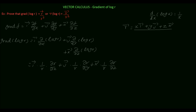Now we need to find the values of ∂r/∂x, ∂r/∂y, and ∂r/∂z. Since r vector equals xi plus yj plus zk, the modulus r equals the square root of x² + y² + z². Differentiating r² with respect to x gives 2r times ∂r/∂x equals 2x. The y² and z² terms vanish, so cancelling the 2s gives ∂r/∂x equals x/r.